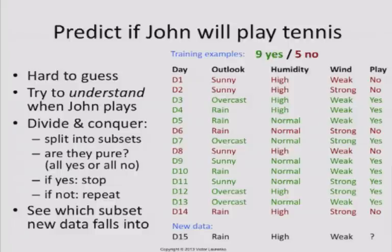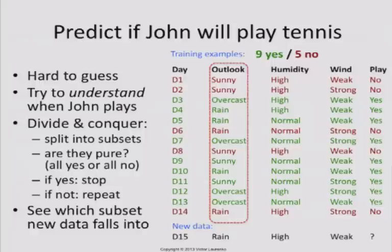When we have a new testing example for which we want to make a prediction, we're going to look at which subset that example falls into and then use the dominant class in that subset. So if this falls into a subset where John always plays, then we're going to say yes, he will play on that day. And if not, we'll say no. So that's the high-level idea.